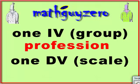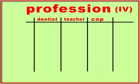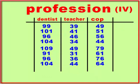In this example, we're going to make our IV a profession, and the DV is going to be annual salary. We want to see if there's a significant difference in the DV by profession. Our three professions are dentist, teacher, and cop. We grab a bunch from each and get their annual salaries.